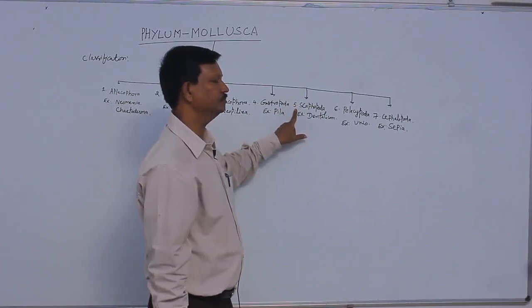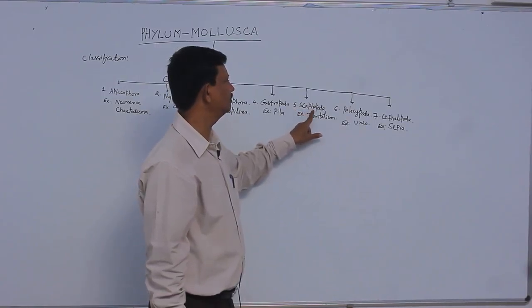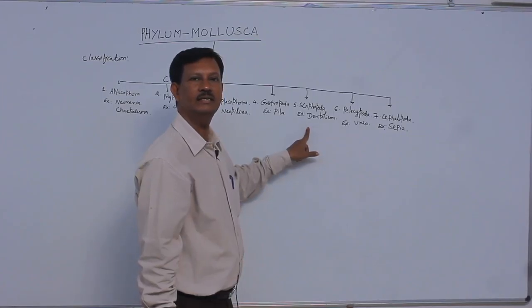Scaphophora. Scaphophora means Tusk-shaped foot is present. Hence, they are known as Scaphophora. Example is Dentalia.